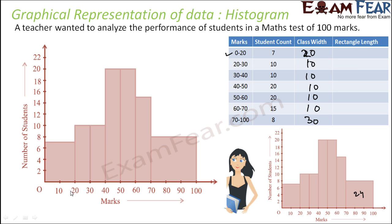For 0 to 20, the area is 2 units wide by height ~7, which is about 14. For 20 to 30, the area is 1 by 10 = 10. Then we have areas of 10, 20, 20, and 15. So the 70 to 100 bar has the largest area of 24, making it appear to have the most students. But it is not the case — it only has 8 students. The 60 to 70 class actually has 15 students.